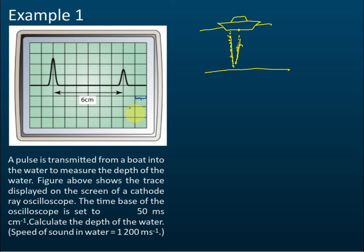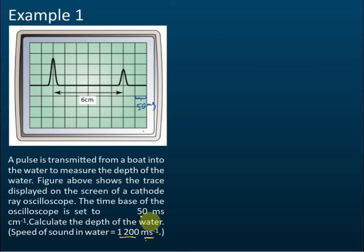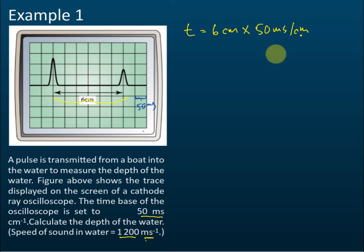The time base is the scale for the horizontal axis — one unit equals how many seconds. So 50 milliseconds per cm means one cm equals 50 milliseconds. The distance between the two pulses is 6 cm, so the time is equal to 6 cm multiplied by 50 milliseconds per cm.